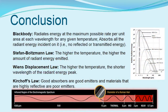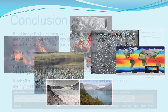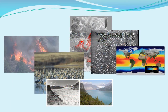Though we cannot see thermal infrared radiation with our own eyes, through an understanding of some basic thermal radiation laws, we can determine the thermal properties of objects and use imaging technology to view and measure features based on their heat signature. We can then harness this technology to learn more and make better decisions about man-made and cultural features in our landscape.